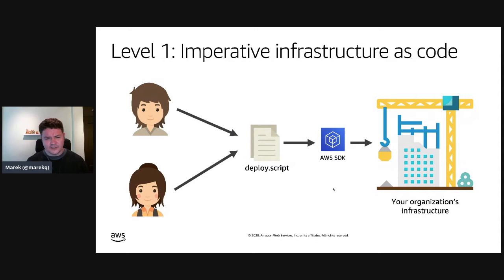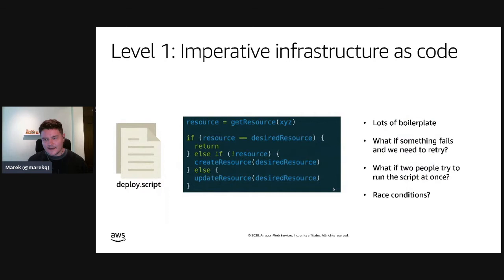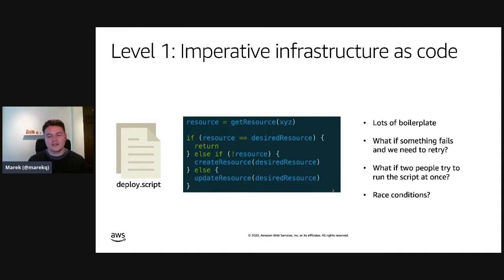Years ago, people started figuring out that manual management was a problem. The first approach, which we call level one, is to use simple scripts to automate these operations. Instead of going into the AWS console, you create a script in PowerShell or Bash that talks to the AWS SDK to create your infrastructure. The downside is there's a lot of unnecessary code — massive scripts with if-then-else conditions, race conditions, or problems when two people try to run the script at the same time. It's a step forward from manual work, but you're still doing a lot of the operations yourself.